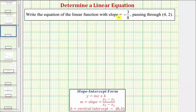We're asked to write the equation of the linear function with slope negative three-eighths passing through the point four comma two.